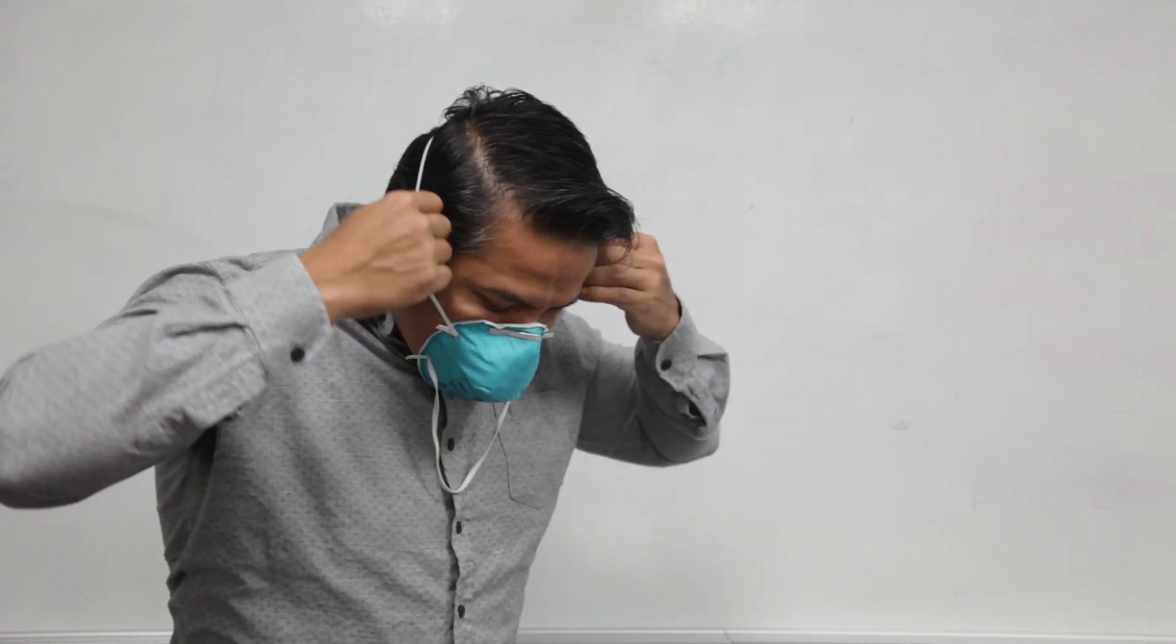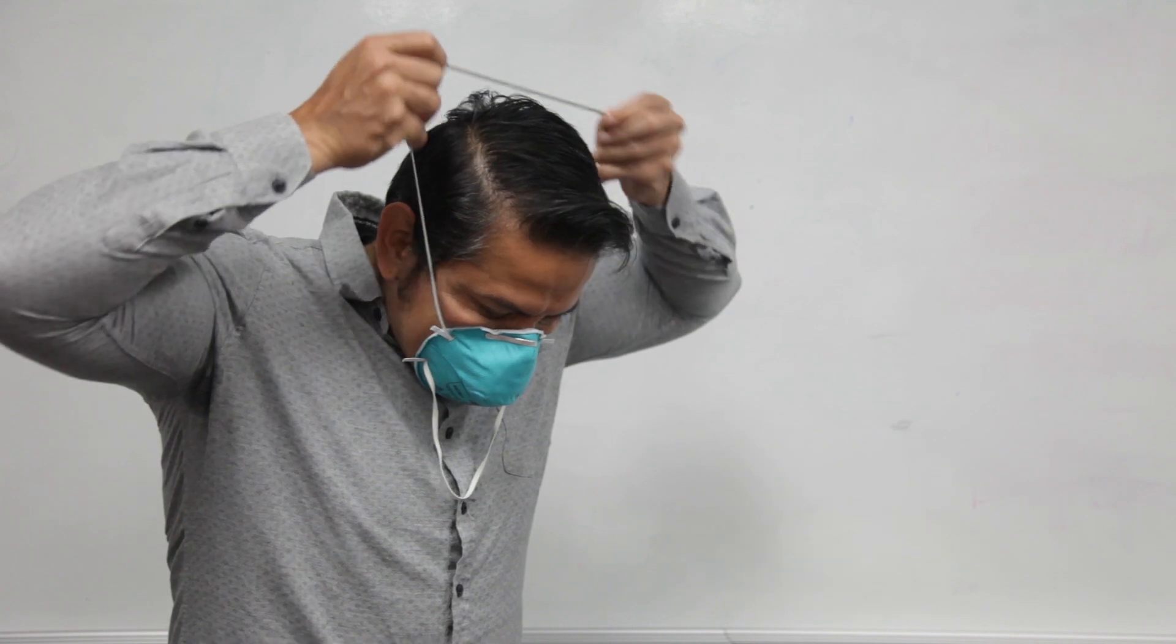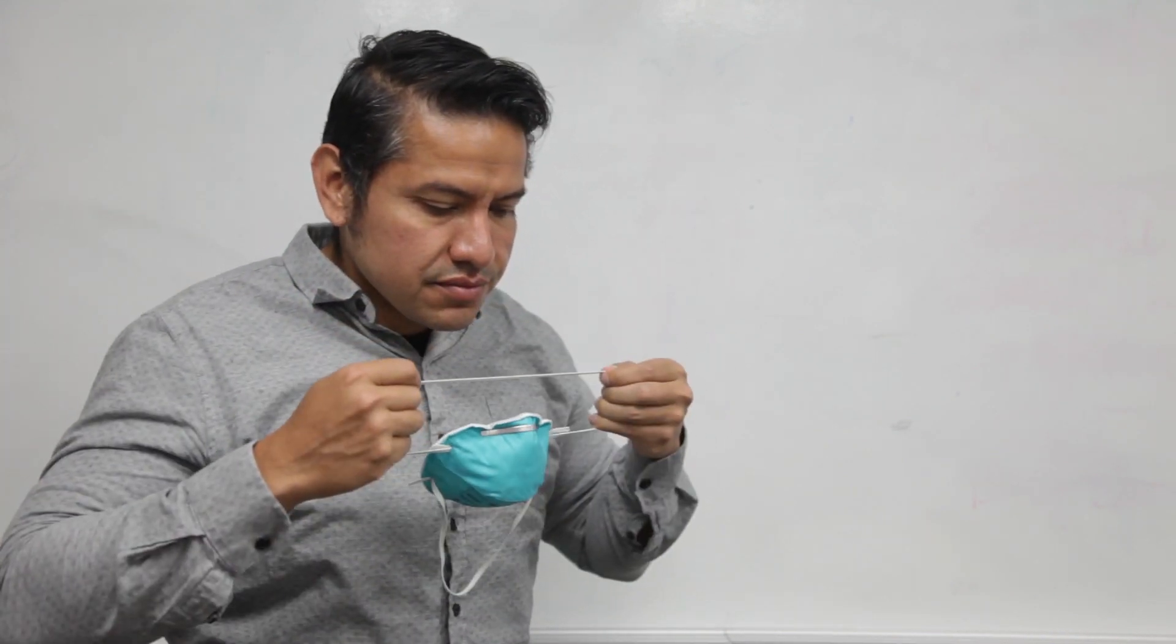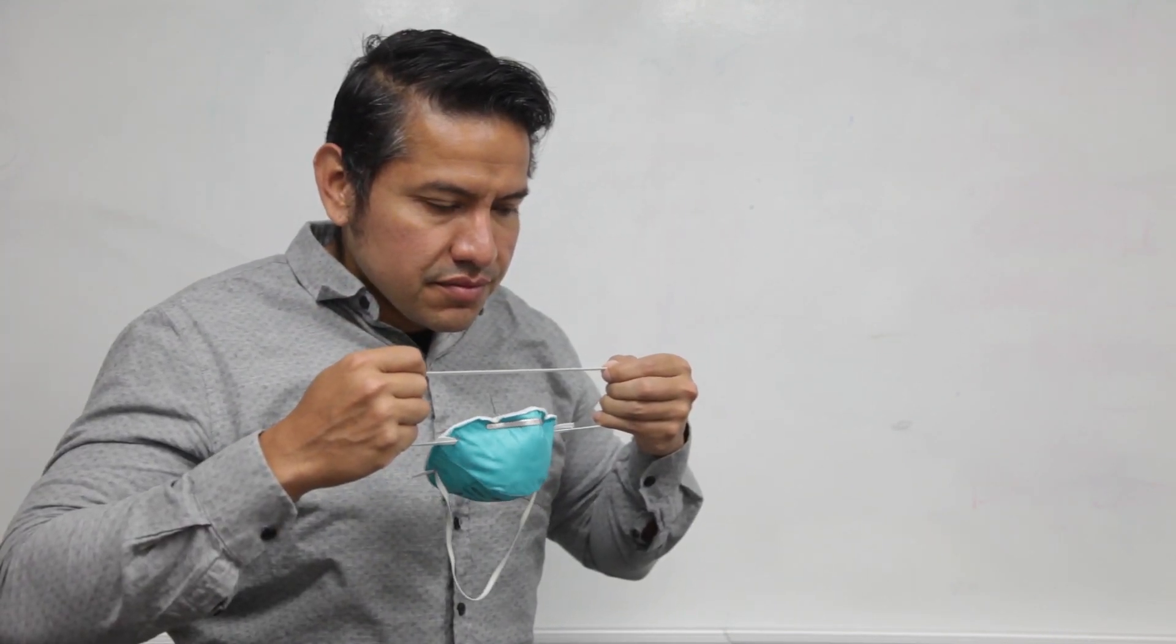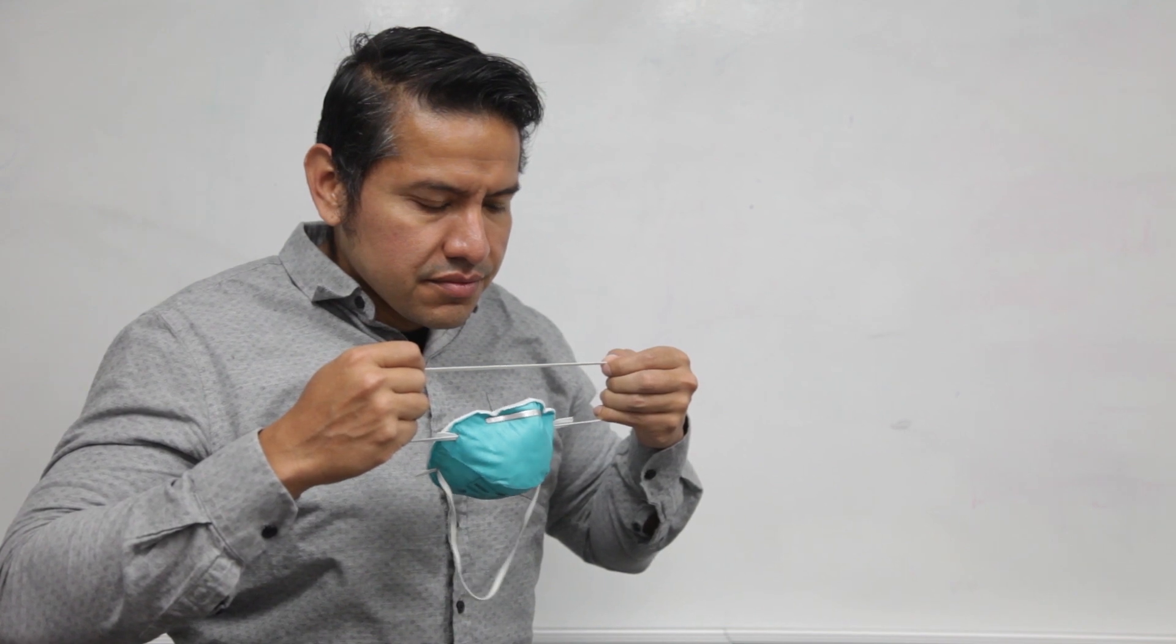Next, use both hands to grab the upper strap. Pull to the sides, then over your head. Keep tension on the upper strap as you remove it, which will let the mask fall forward.